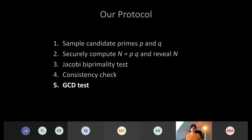The last step of our protocol is a GCD test. It repeats similar techniques with careful space extension to avoid overflows. Importantly, the GCD test is introduced because there is a certain type of non-biprime that passes the Jacobi test, and the GCD test is there to catch those exceptions.